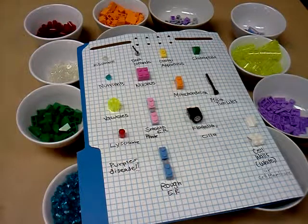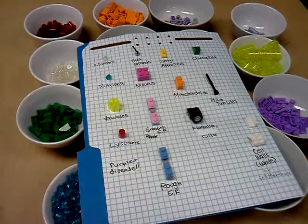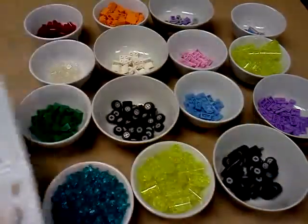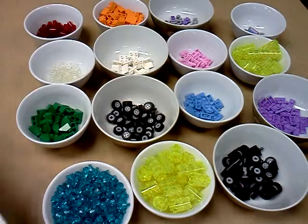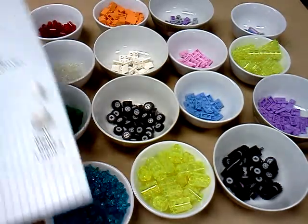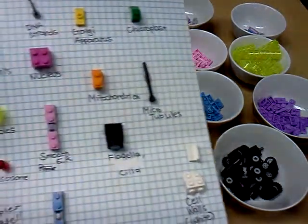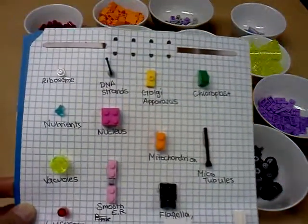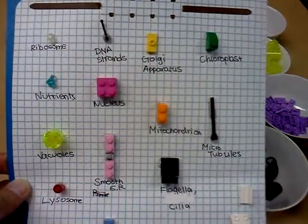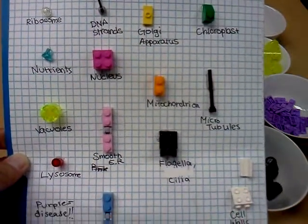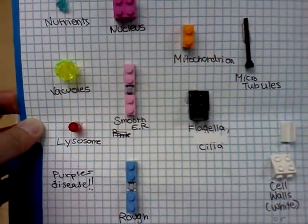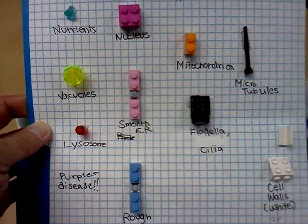Today we experimented with a lesson using Lego pieces that I got from the Lego store. In this process of experimentation, we learned we needed a legend or a standardization form so we could standardize what the different parts of a cell would look like.